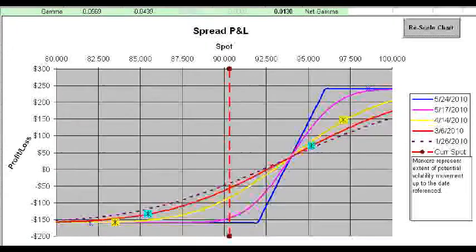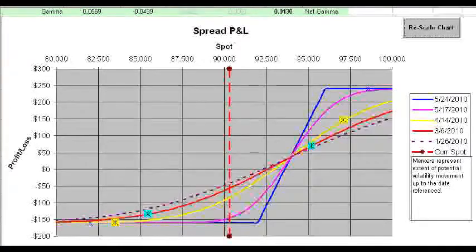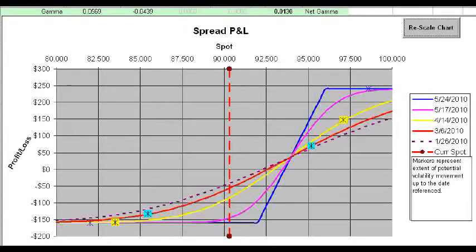Okay, so now we have our bull call spread, and it looks pretty good. We have a positive win-loss ratio, but I'm still not quite satisfied with this trade because I'm still paying $150 to put it on. And I'm always looking for opportunities to offset premium at low risk. So one of the things that I often look at is the possibility of selling an out-of-the-money option that is unlikely to get hit.